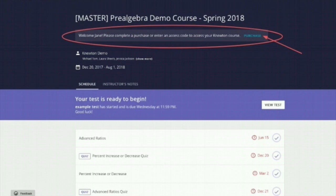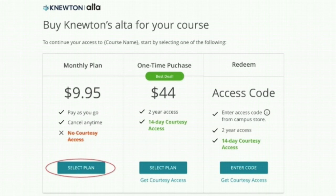To purchase online or to enter your access code, click on the Purchase link at the top of your course page. You can purchase access by selecting Monthly Payment or One-time Purchase, which will allow you to pay by credit card.